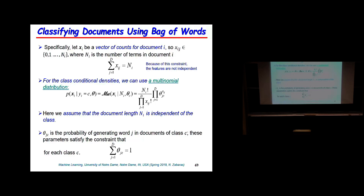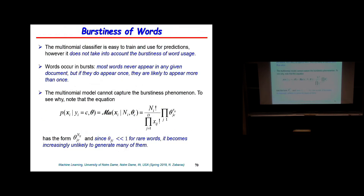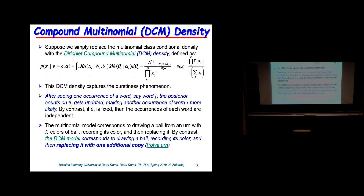If a document is about windows and suddenly the word 'windows' appears, it's very likely to appear again with higher probability. We need to modify the model to account for the burstiness of words — the phenomenon that if a rare word appears once, it will tend to appear again with higher probability. So we need to allow the probability to be non-constant.